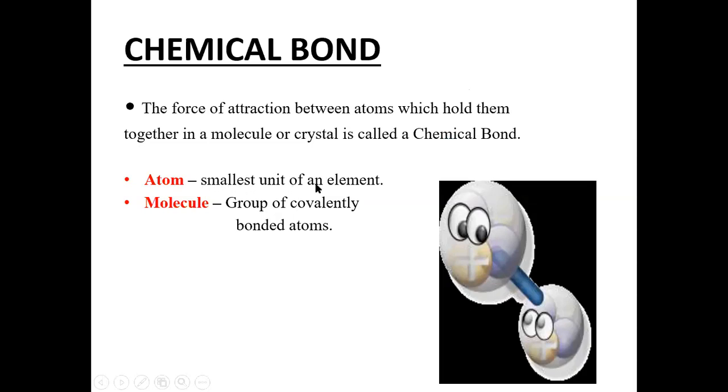Atom is the smallest unit of an element and the molecule is a group of covalently bonded atoms. Covalent bonds are combined and we call them molecules.